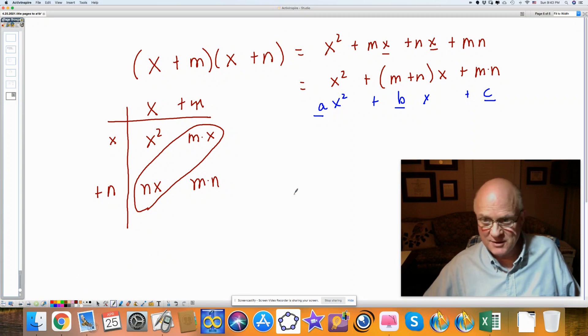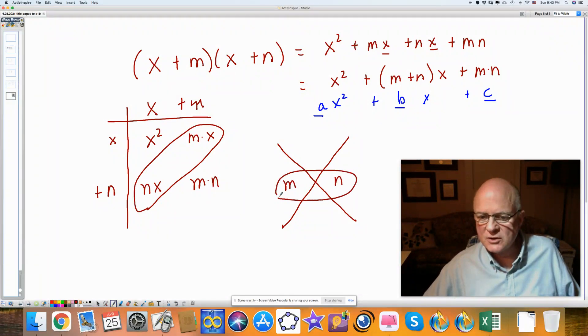And if we look at the diamond shape that we're so fond of using to factor, if we have an m here and an n here, those are the two numbers, they're going to be my factors, here and here.